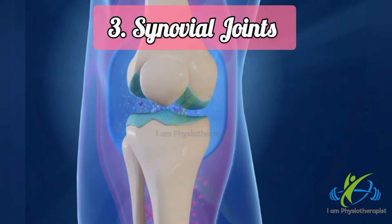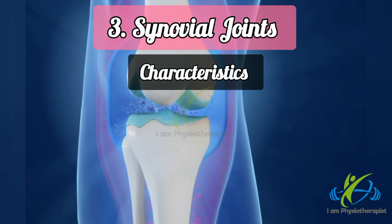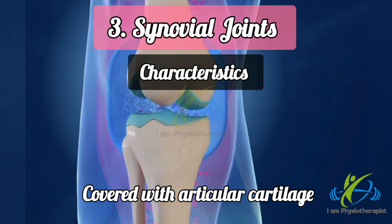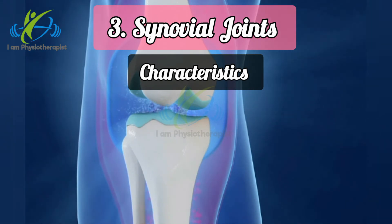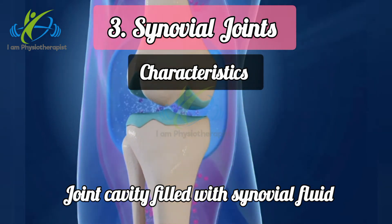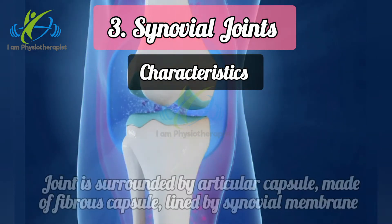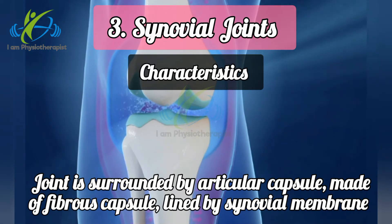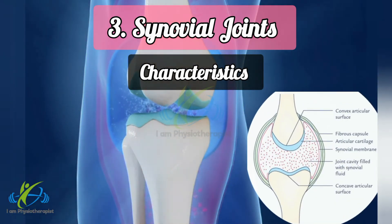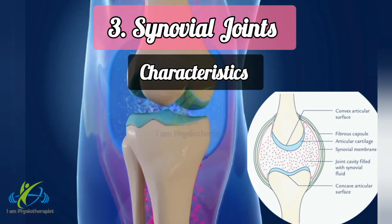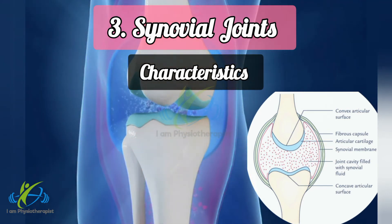Synovial joints are the most evolved and therefore the most mobile type of joints. Characteristics of synovial joints: the joint surfaces are covered with articular cartilage, which is avascular, non-nervous, and elastic in nature. Between the articular surfaces there is a joint cavity filled with synovial fluid. The joint is surrounded by an articular capsule made up of a fibrous capsule lined by synovial membrane. The fibrous capsule stabilizes the joint such that it permits movements but resists dislocation. The synovial membrane produces synovial fluid to keep the surfaces lubricated. Synovial fluid is like egg white.